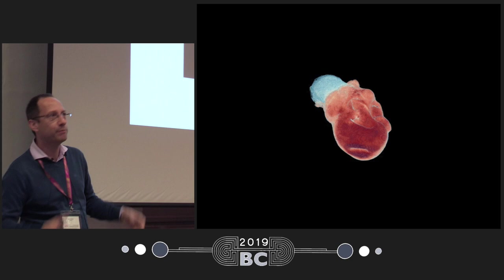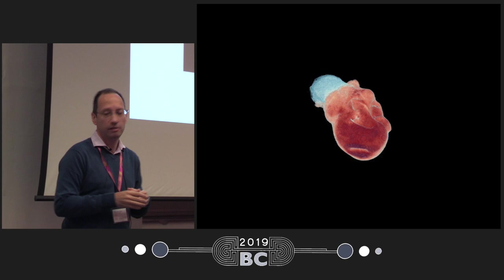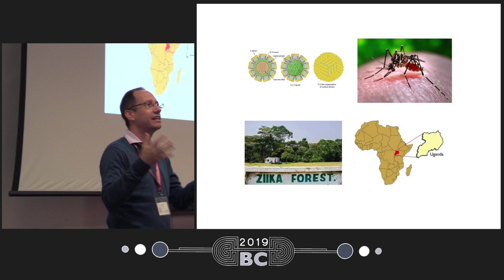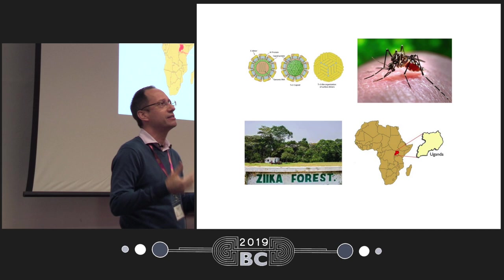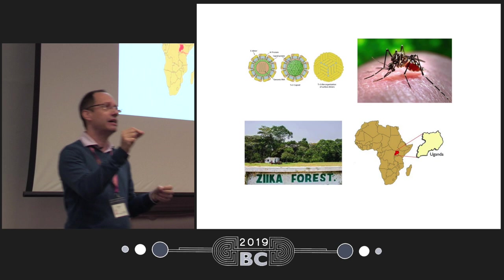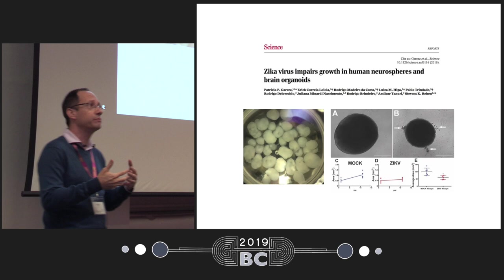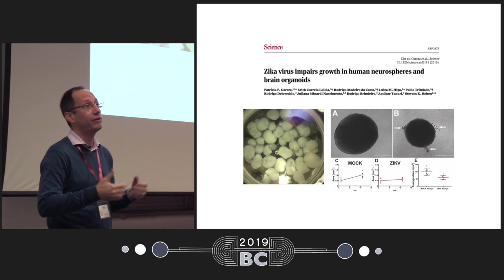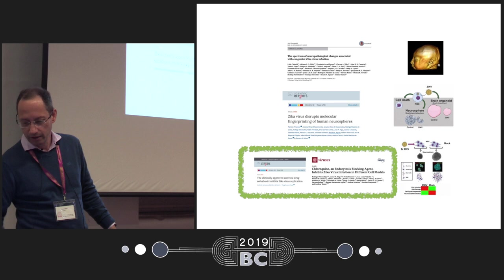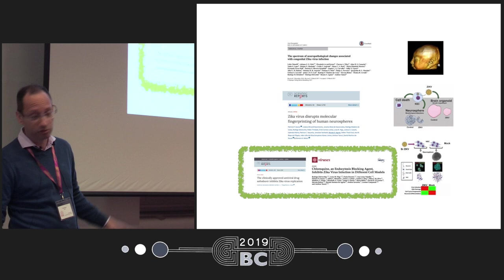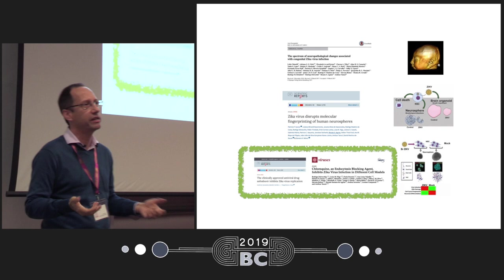What exactly can we do with these kinds of cells? One example is that we used this approach to show the link between microcephaly and the Zika virus. In Brazil, we had a huge outbreak of Zika virus that was associated with increasing cases of microcephaly, but it wasn't clear at the time — about three years ago — whether the Zika virus was actually causing microcephaly. Using this approach, we were able to confirm that Zika virus was causing microcephaly. We published several papers on this, and one of the most important findings was two compounds that could potentially be used in the case of another outbreak for pregnant women.